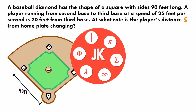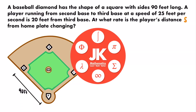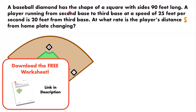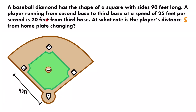Here we have a related rates problem where we're told that a baseball diamond has the shape of a square with sides 90 feet long. A player running from second base to third base at a speed of 25 feet per second is 20 feet from third base. We want to find at what rate is the player's distance s from home plate changing.